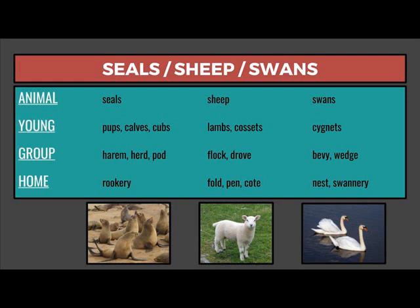The young of sheep are lambs or cossets — those are pet lambs. A group of sheep is a flock or drove. The home of sheep is a fold, pen, or cote.